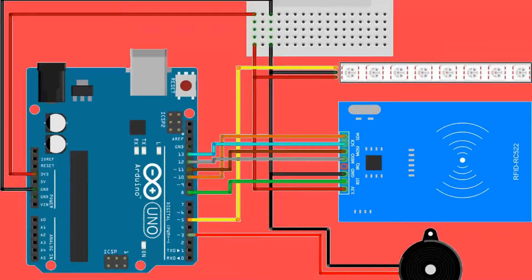The connections are: RFID reset pin is connected to pin 9 of Arduino. SDA pin is connected to pin 10 of the Arduino. MOSI pin is connected to pin 11 of Arduino. SCK pin is connected to pin 13 of Arduino.